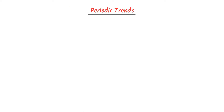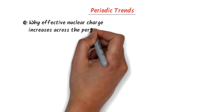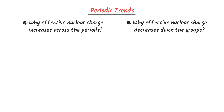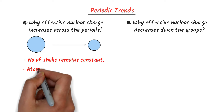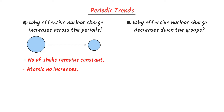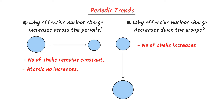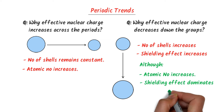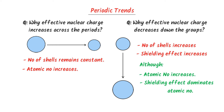Now let me teach you the periodic trends of effective nuclear charge. Effective nuclear charge increases from left to right across the periods. Down the groups, effective nuclear charge decreases because the number of shells increases, which causes the shielding effect to increase. Although atomic number increases down the group, the increased number of shells dominates the increased number of protons. Therefore, effective nuclear charge decreases down the groups.